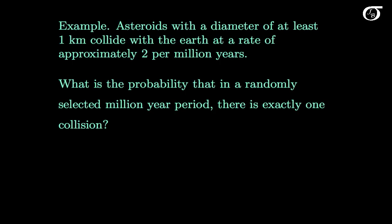Returning to our example: asteroids with a diameter of at least 1 km collide with the Earth at a rate of approximately 2 per million years, and we want to know the probability that in a randomly selected million year period there is exactly one collision. The Poisson distribution may very well provide a reasonable approximation. Probably not exactly perfectly true — are these collisions occurring independently of one another? That's debatable — but it might provide a reasonable approximation anyway.